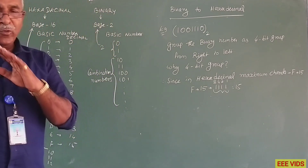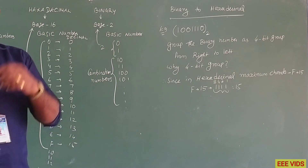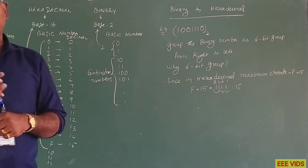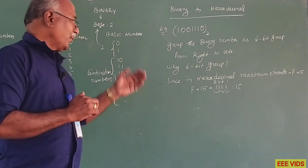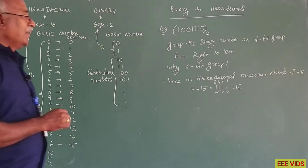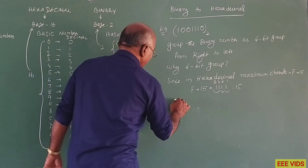If we use 3 bits, we can only add up to 7, so the maximum character would be 7. That is why we use 4 bits instead — it's a similar process applied to hexadecimal.